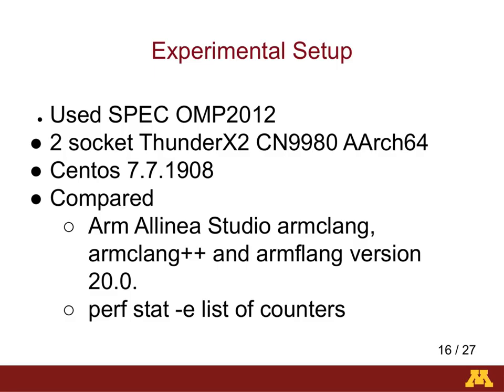Our experimental setup uses the SPEC OpenMP 2012 benchmark suite. The OpenMP benchmark is a highly scalable set of benchmarks written in C, C++, and Fortran, frequently used to compare multi-threaded system performance. Results are publicly available in the repository once submitted and approved. For our experiments, we used a dual-socket ThunderX2 ARM 64-bit system. We used two cores per socket and up to four threads per core, with 256 gigabytes of memory. We used five performance counters at a time for each run using the Perfstat tool to collect performance counter values.